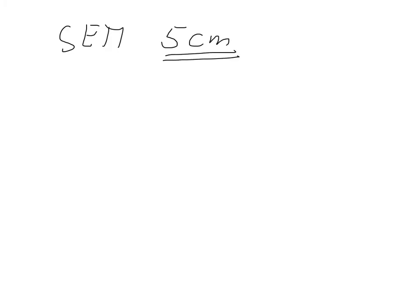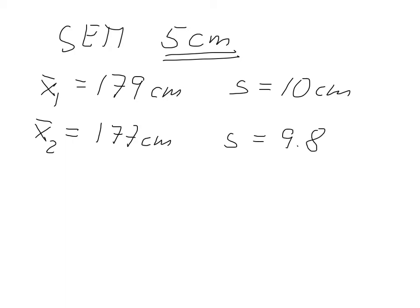Of course, we could do that with another sample. So in the first sample, which I call X1, we had 179 centimeters with standard deviation of 10 centimeters. We could do that with another sample of four students. So that would be our second sample, X2. Let's say we get 177 centimeters with a standard deviation of 9.8 centimeters.